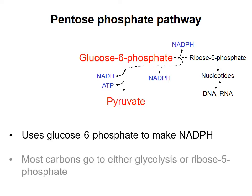The two variations of the pathway differ in terms of what happens to the carbon atoms that are not oxidized to make NADPH. The remaining carbons either go to glycolysis and are oxidized to pyruvate, or they're used to make ribose 5-phosphate, which is good for synthesizing nucleotides. Let's look at each of these options in turn.